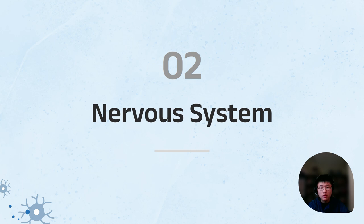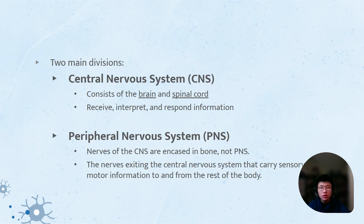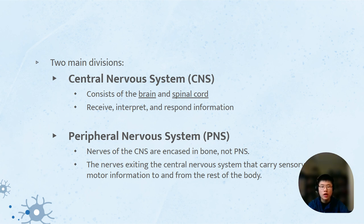Second, the nervous system. There are two main divisions: the central nervous system, which consists of the brain and the spinal cord, and the peripheral nervous system, which is everything else. The central nervous system receives, interprets, and responds to information, while the peripheral nervous system is essentially all the nerves exiting from the central nervous system, carrying sensory information throughout the body.